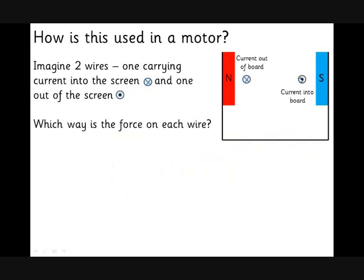But imagine we had another wire, and the current is going away from you. This cross, it's kind of like a dart where the flights are indicated by the cross, so that's a dart going away from you. This is a dart that's going to hit you with a point coming towards you.